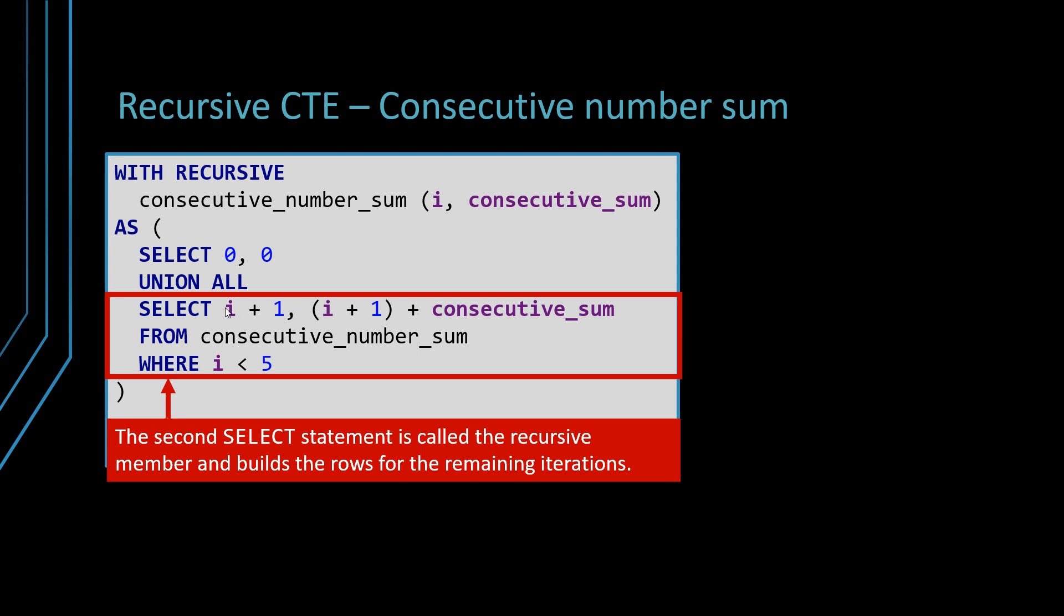And here we will see that we are going to pass the previous values to this query. So first we'll have the value zero zero, then we'll compute the values zero plus one, zero plus one plus zero. And we will pass those again and again and again.